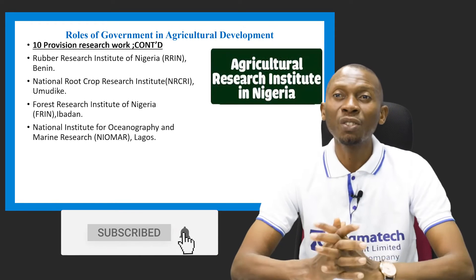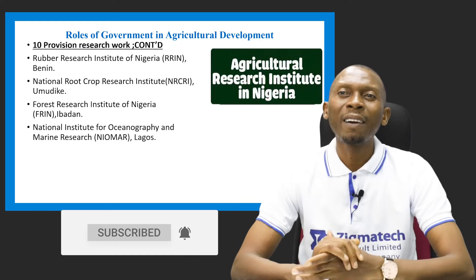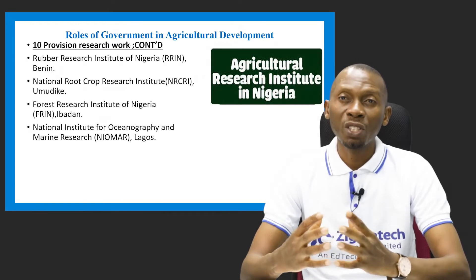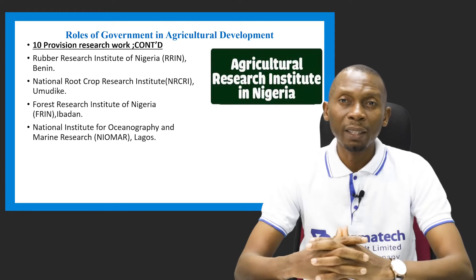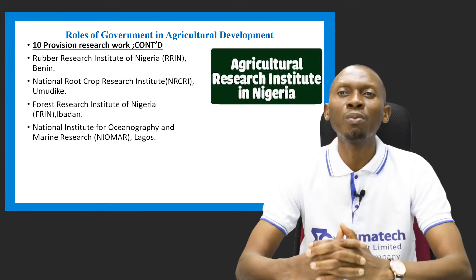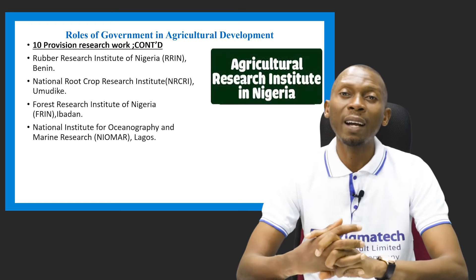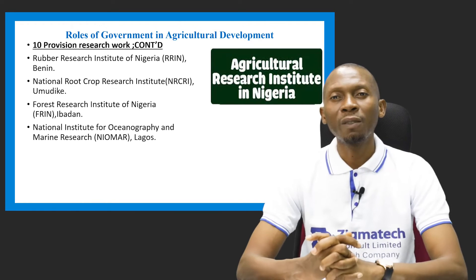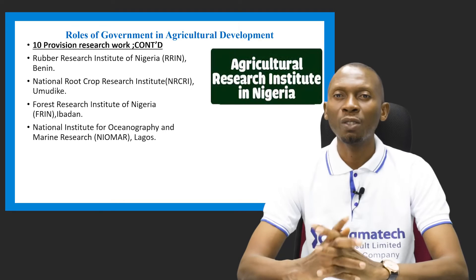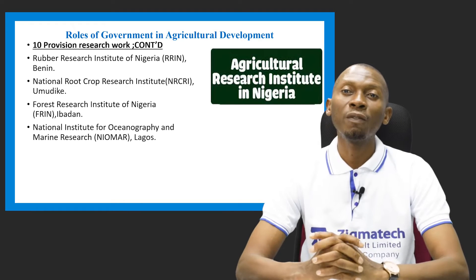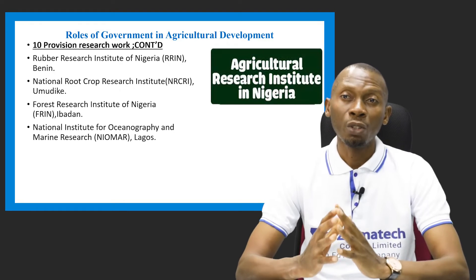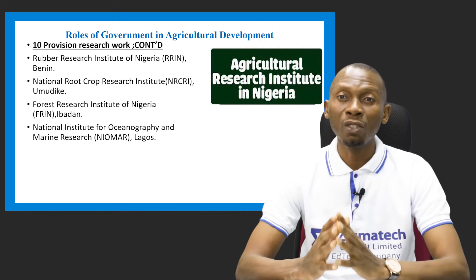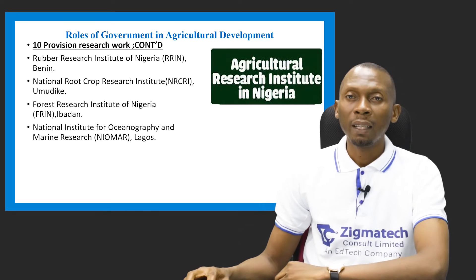More research institutes established by the Nigerian government include the Rubber Research Institute of Nigeria (RRIM) in Benin, National Root Crop Research Institute (NRCRI) in Umudike, Forest Research Institute of Nigeria (FRIN) in Ibadan, and the National Institute for Oceanography and Marine Research (NIOMAR) in Lagos.